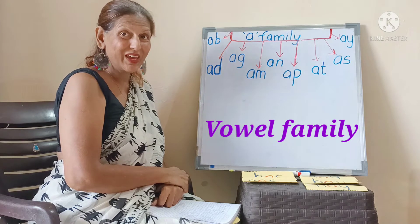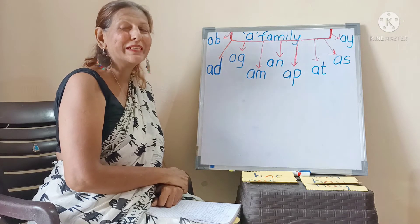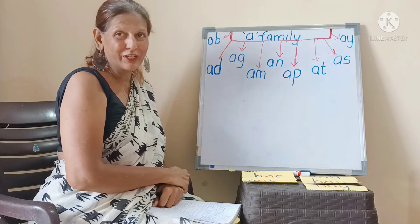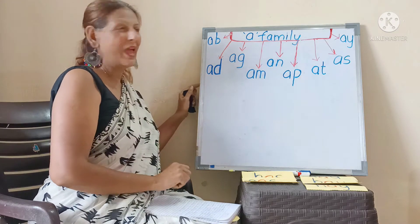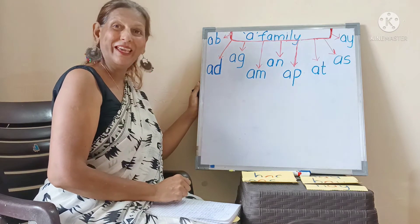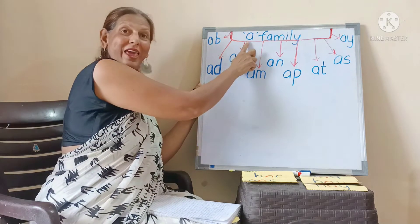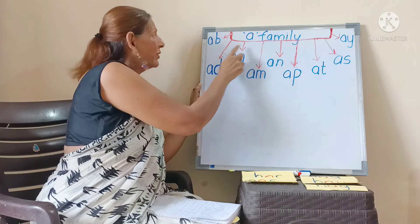Okay, we have completed, almost completed A family words. So let's see what all we have already done. These are A family.